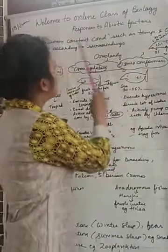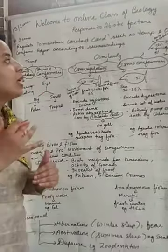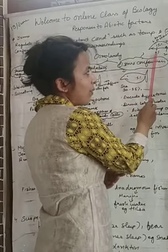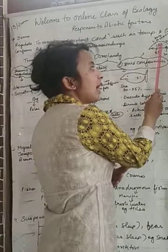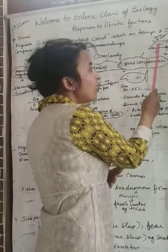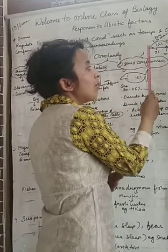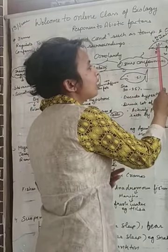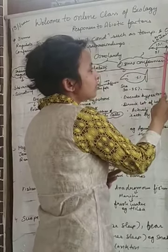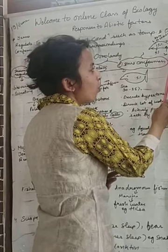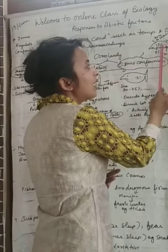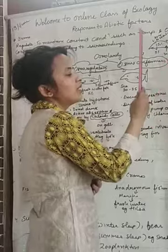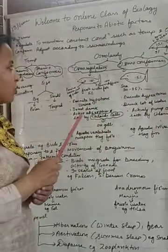Osmoconformers, on the other hand, adjust according to the surrounding. For example, if the salt concentration outside is 5% and inside is 15%, the organism adjusts in such a way that the difference becomes minimal — it can be up to 28 — so it conforms to the surrounding rather than actively regulating. I hope we have understood osmolarity.